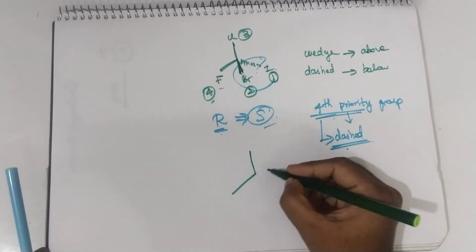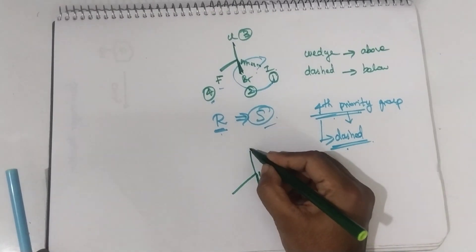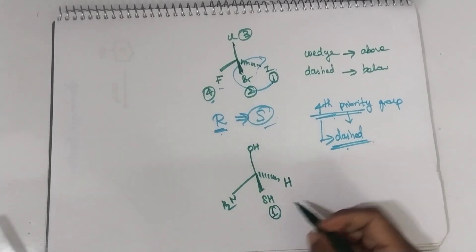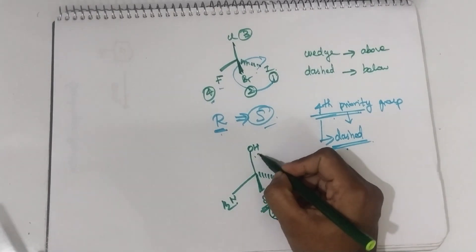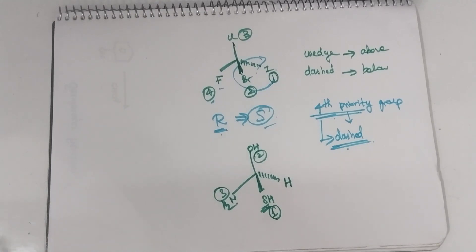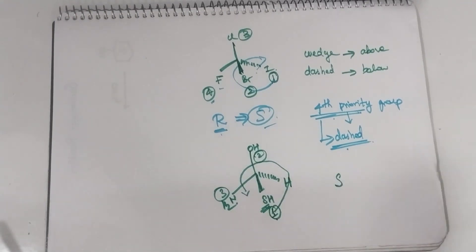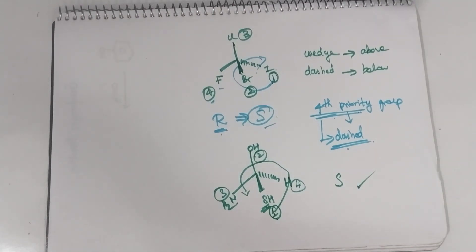Similarly, here is another example. In this case, you are having hydrogen, OH, NH2, and SH. First of all, you have to give the priorities. Here, looking at the atomic numbers — sulfur, nitrogen, oxygen, hydrogen — sulfur has the highest atomic number, so SH gets first priority, oxygen (OH) gets second, nitrogen (NH2) gets third, and hydrogen gets fourth. After giving the priorities, rotate and check from 1, 2, 3 — it is anti-clockwise direction, hence it should be S configuration. Now check the fourth priority group: hydrogen is present in the dashed position, so no need to change the configuration. It is simply S configuration.